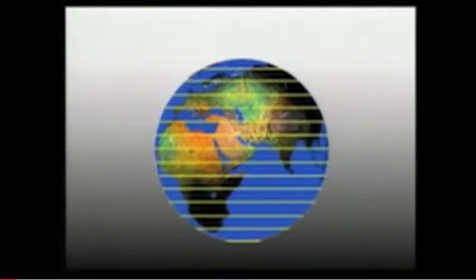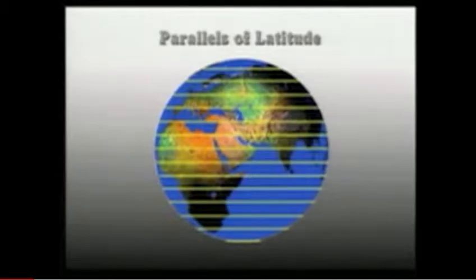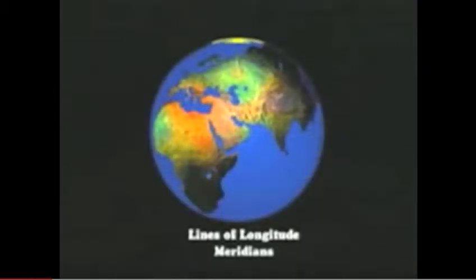So far, we've discussed the first part of the grid system found on globes, parallels of latitude. Now let's take a look at the second, lines of longitude, also called meridians.